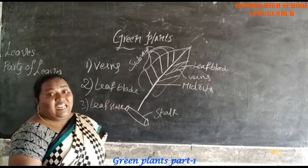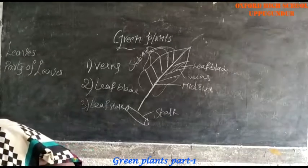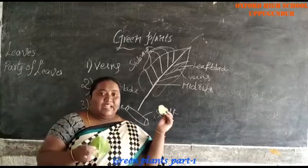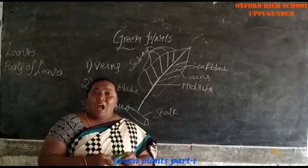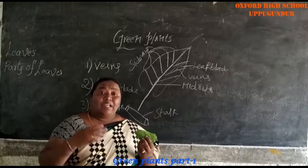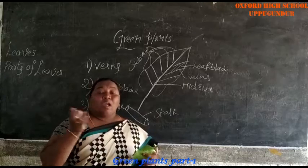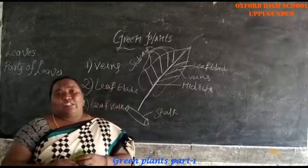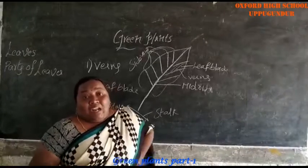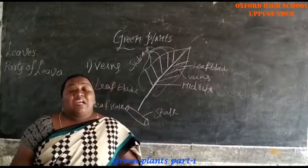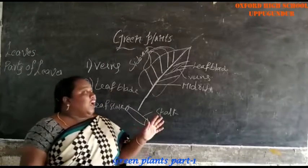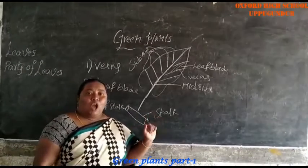Here we can see different types of leaves. All the leaves are not in the same shape. They will be reticulate or parallel. We can see different types of leaves — mango trees have different leaves, neem trees are different, banana trees, banyan trees, rose flowers. Different types of plants have different types of leaves, but all of them are green plants.